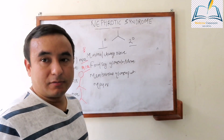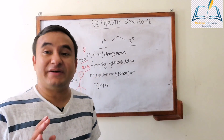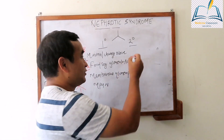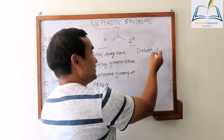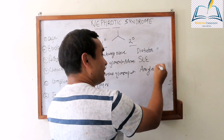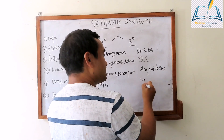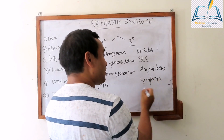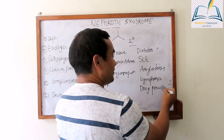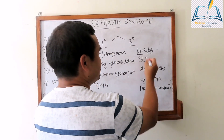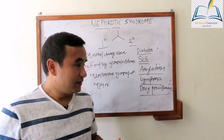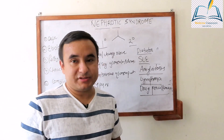For secondary nephrotic syndrome, as a clinician we see patients with diabetes who present with gross albuminuria. Diabetes mellitus is one cause of secondary nephrotic syndrome. Similarly, SLE can cause secondary nephrotic syndrome, as can amyloidosis. Different tumors like lymphoma — especially Hodgkin's lymphoma — can present with nephrotic syndrome. There are also drugs like penicillamine, which we often use in Wilson's disease, that can cause nephrotic syndrome.